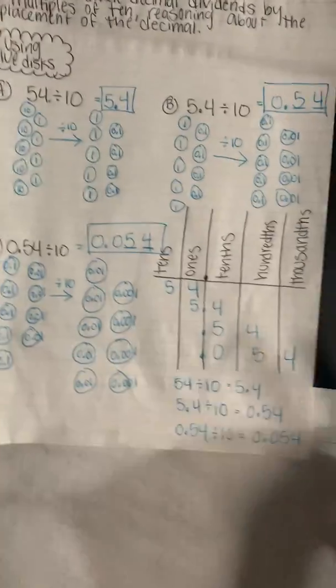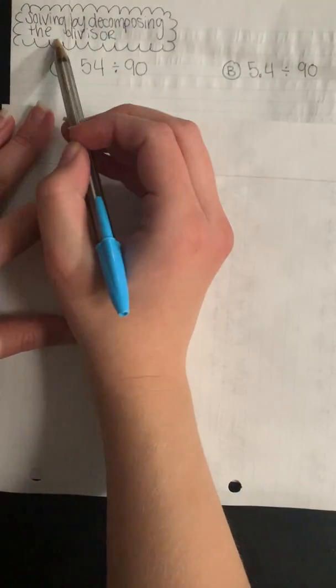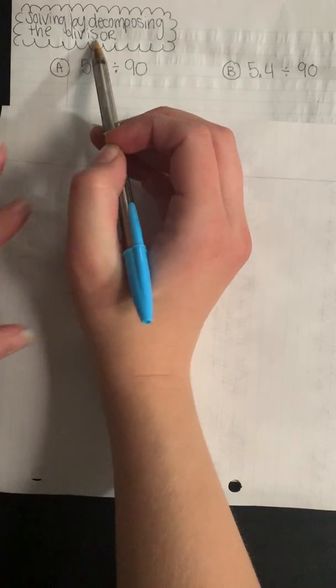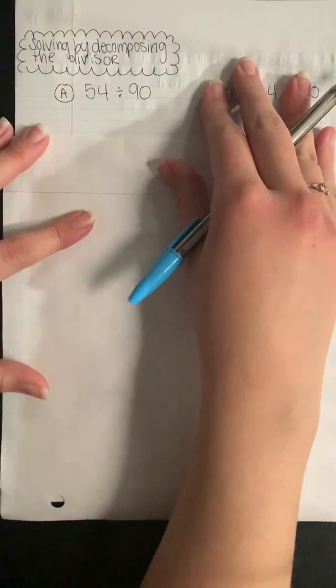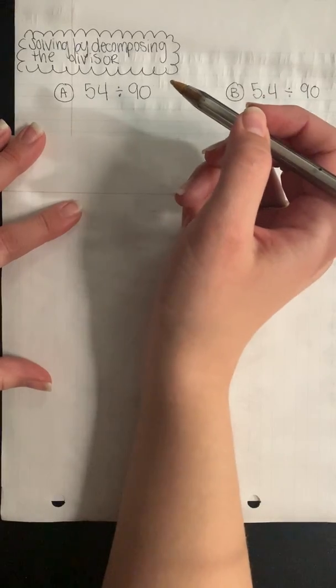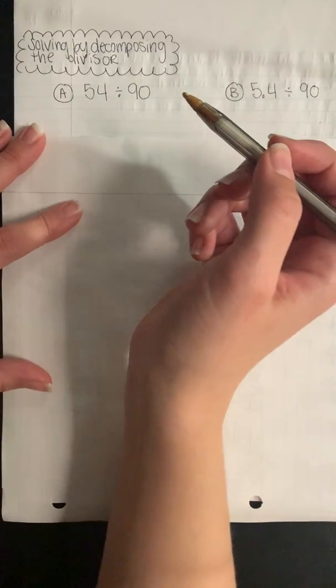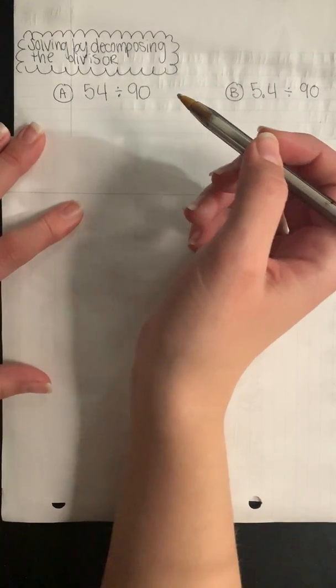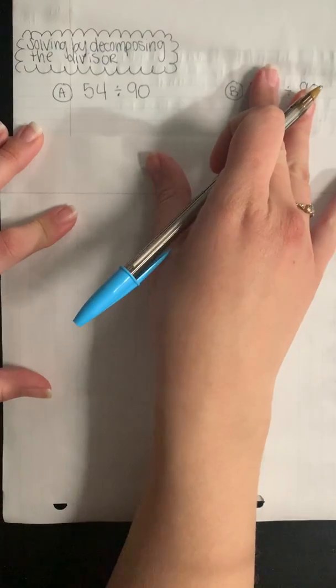Seeing that pattern of where the decimal is going is really important as we're solving these types of problems and working with powers of 10. We're going to practice a different kind of problem now, focusing on solving by decomposing the divisor. We've practiced this before, so it should be a little bit of a review, but we used it with more estimation and with whole numbers. This time we'll apply it with some decimals.